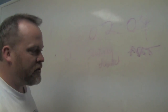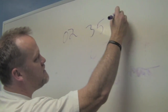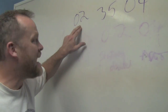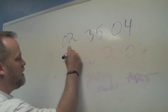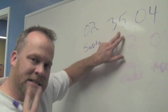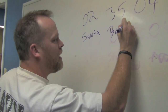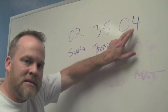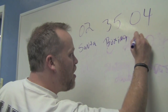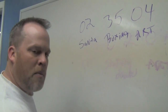Let's take another string of numbers: 0-2-3-5-0-4. Since it's the first two digits in the series, it's Santa Claus. The next one is Muhammad Ali, but since it's second in the sequence, we take the verb — boxing. The last one again is Sarah, and since it's last in the sequence, we take the noun — art. Santa Claus, boxing, art.